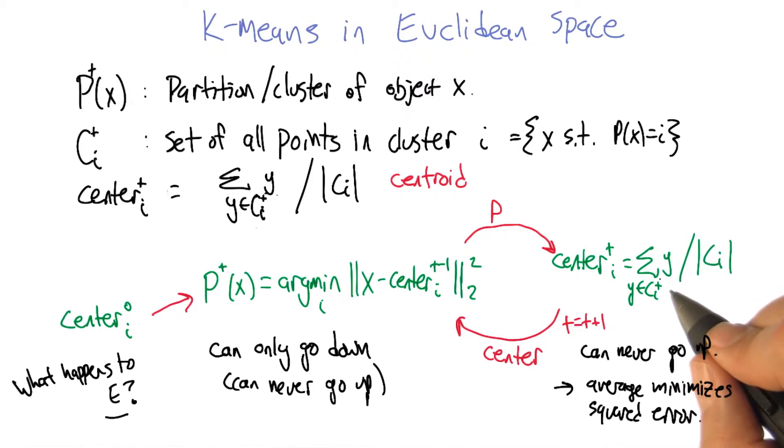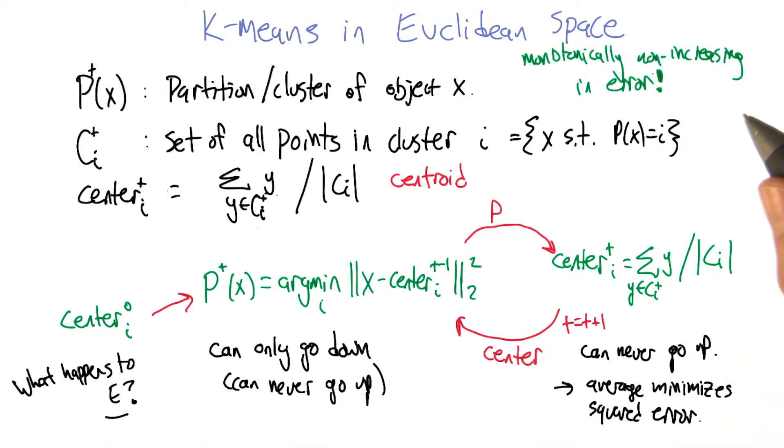So put them together, you're guaranteed to be, let's see, what's the math term? Monotonically non-increasing in error. Monotonically non-increasing in error. Very nice.